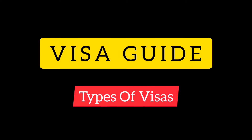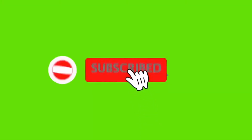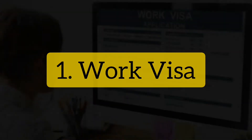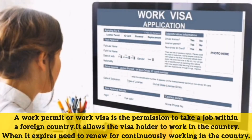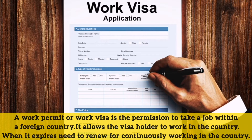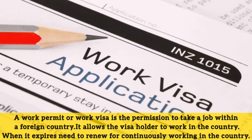Welcome to channel BNG. Today we're going to discuss types of visas. Number one: work visa. A work permit or work visa is the permission to take a job within a foreign country. It allows the visa holder to work in the country, and when it expires, it needs to be renewed for continuously working in the country.